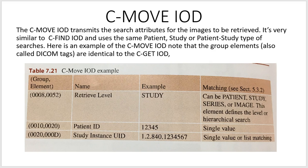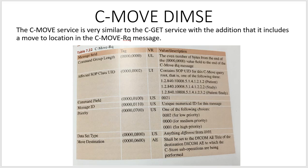The C-MOVE IOD is again at the study level, looking for a particular patient with that ID and a particular exam under that ID using the study instance UID. The C-MOVE DIMSE service is very similar to C-GET service with the addition that it includes a move-to location in the C-MOVE request. C-GET always returns to the original location; C-MOVE can send to a third-party destination. The move destination shall be set to the DICOM AE title of the destination DICOM entity to which the C-STORE sub-operations are being performed.